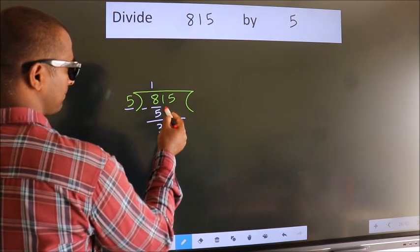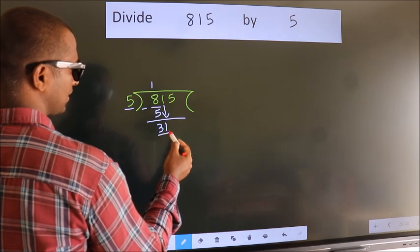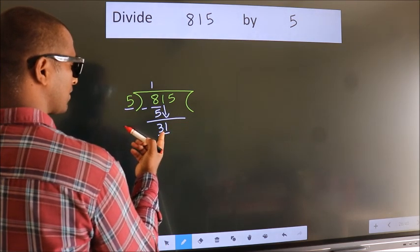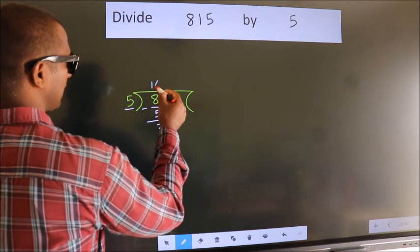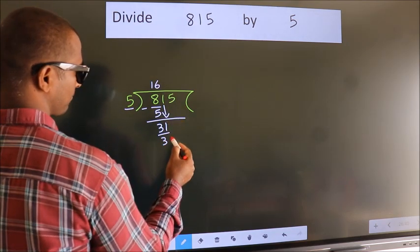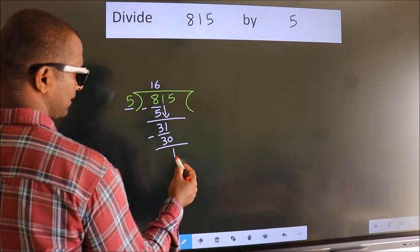After this, bring down the beside number. So 1 down. So 31. A number close to 31 in 5 table is 5 times 6 is 30. Now we subtract. We get 1.